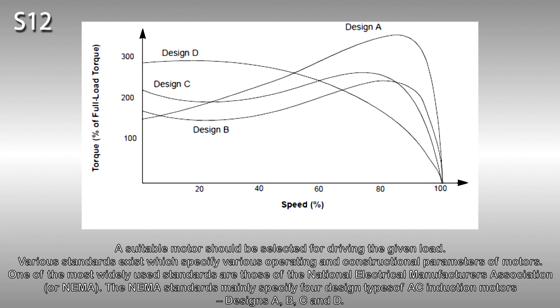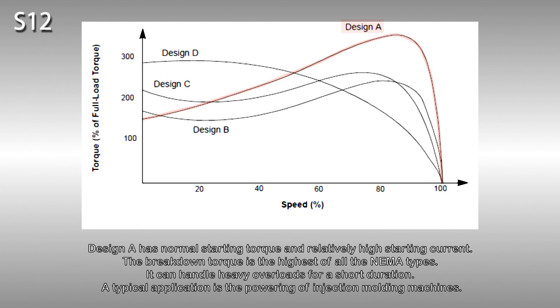A suitable motor should be selected for driving the given load. There are various standards which specify various operating and constructional parameters of motors. One of the most widely used standards are those of the National Electrical Manufacturers Association or NEMA. The NEMA standards mainly specify four design types of AC induction motors, designs A, B, C and D. Design A has normal starting torque and relatively high starting current. The breakdown torque is the highest of all the NEMA types. It can handle heavy overloads for a short duration. A typical application is the powering of injection molding machines.